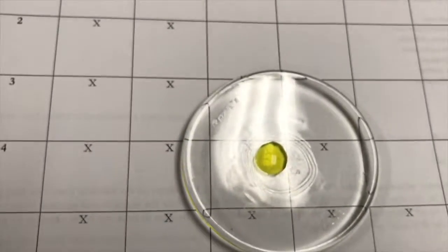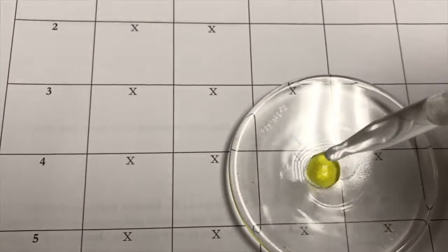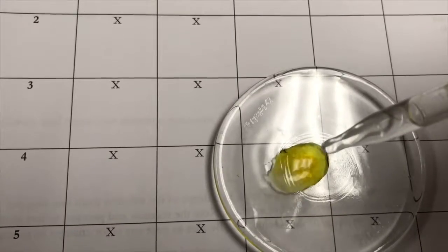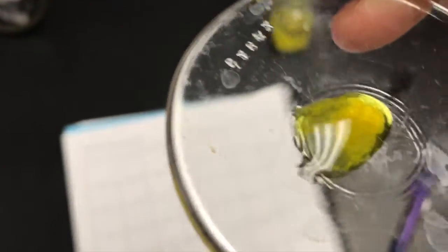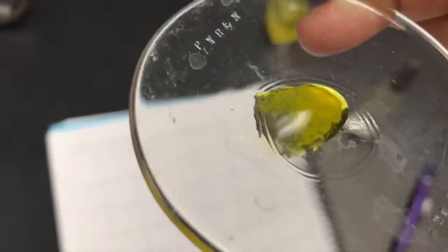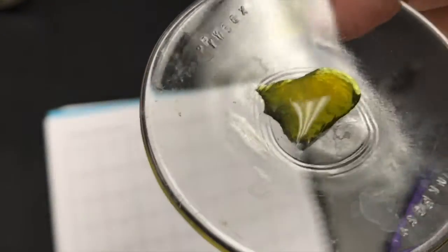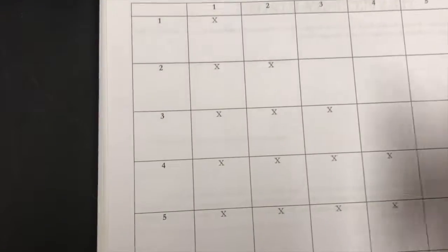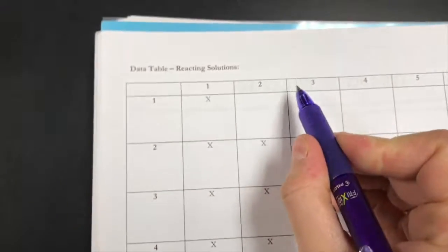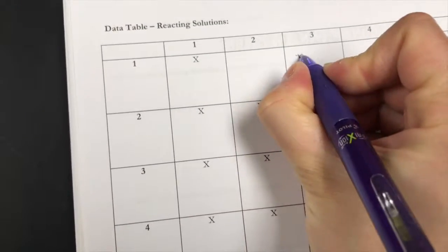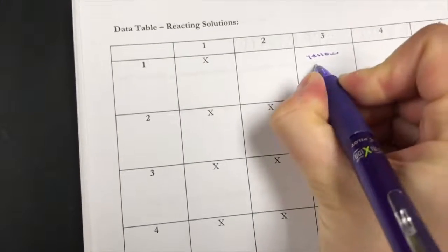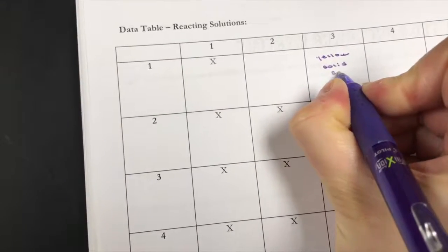Make sure that you look at this really carefully. If you look at this, notice a yellow solid formed, and so what I'm going to do in my notes is write for one and three: yellow solid forms, and I'm going to be able to use this information later on when I'm trying to figure out the identity of each of these substances.